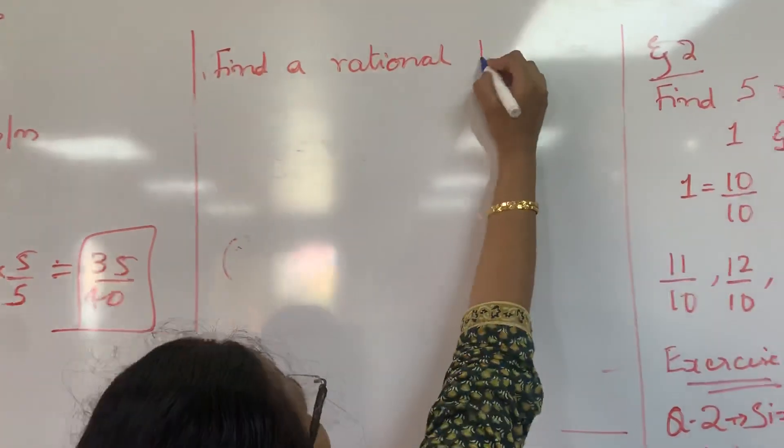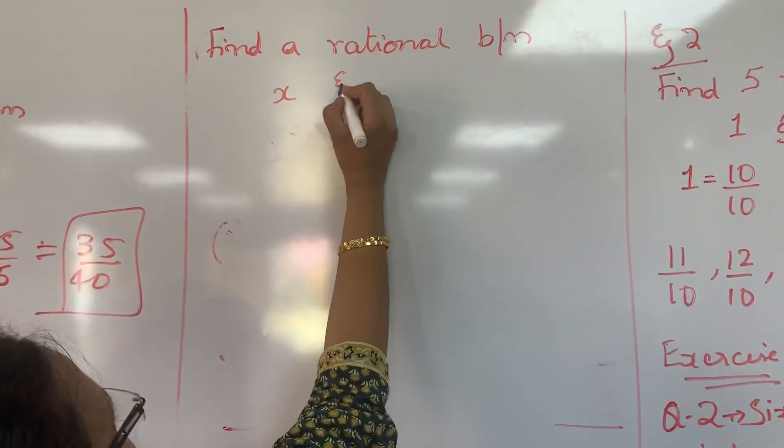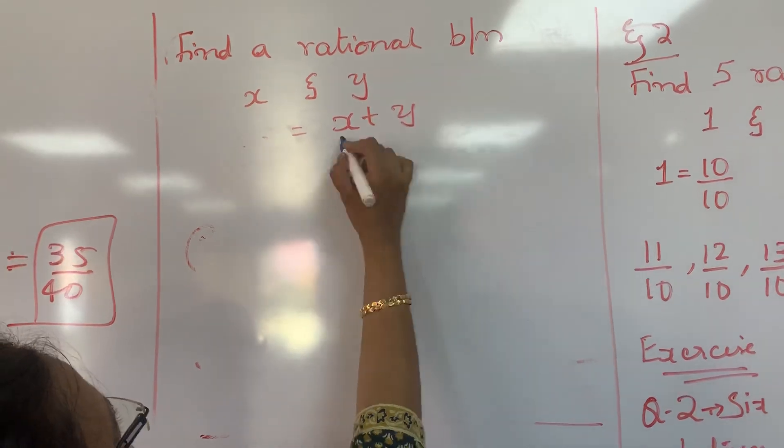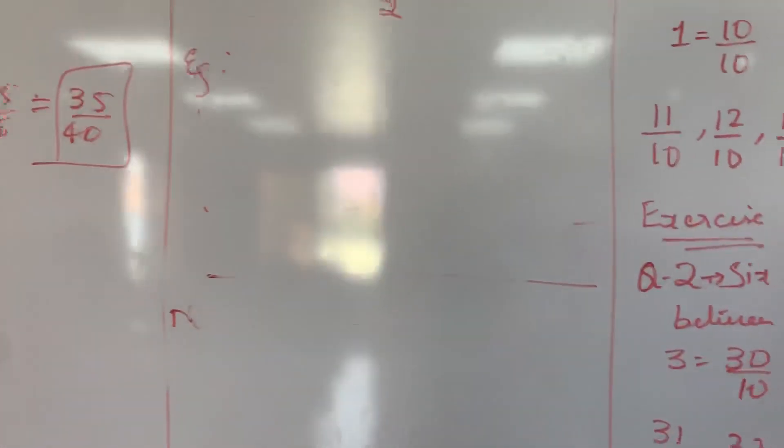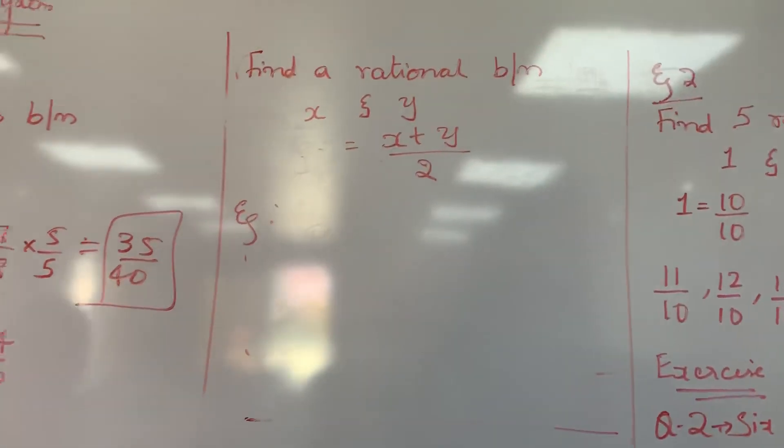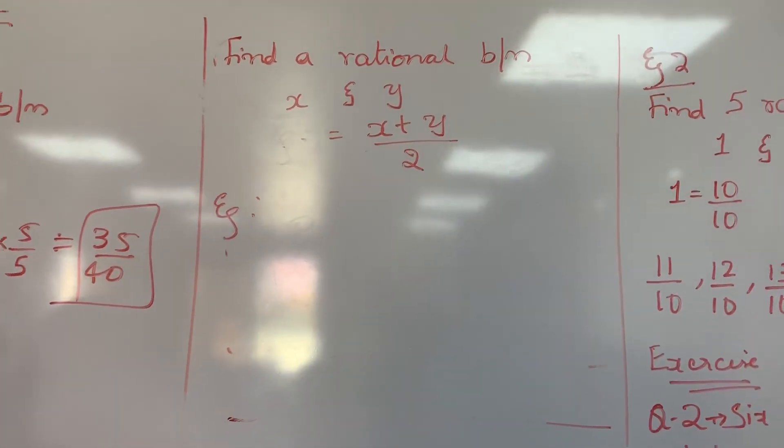And just tell you now. Find a rational number between X and Y. So answer will be the average of it: X plus Y by 2. Let us see some examples. See, find a rational number between...